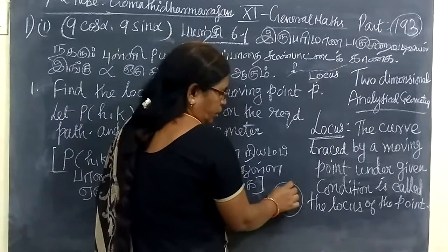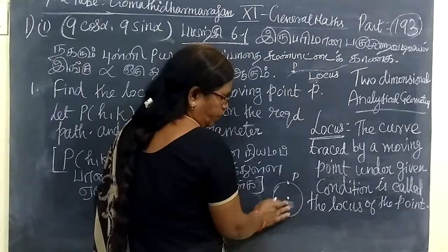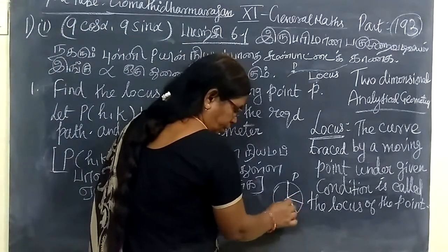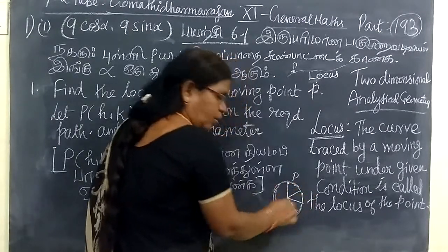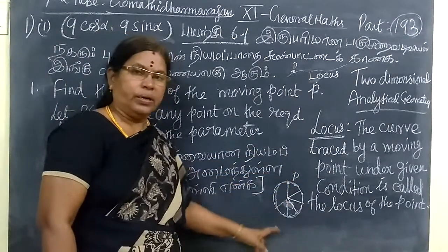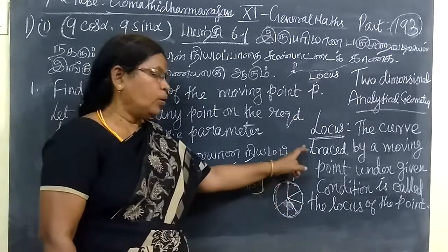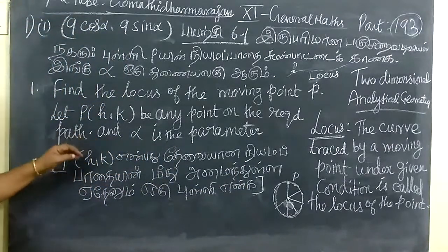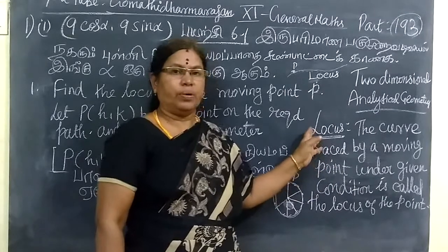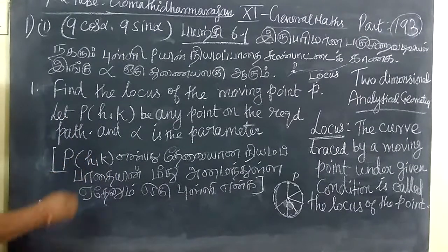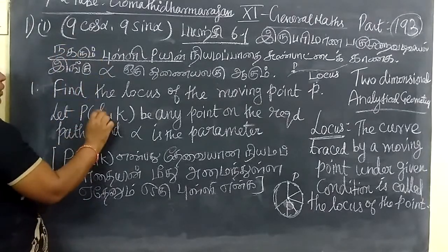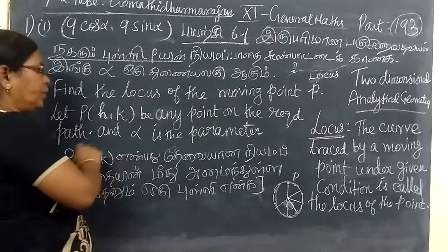Suppose we have a curve, the moving point. It is at the same distance, same distance. The curve is at the same distance. Under the points of the curve, the curve is at the same distance.